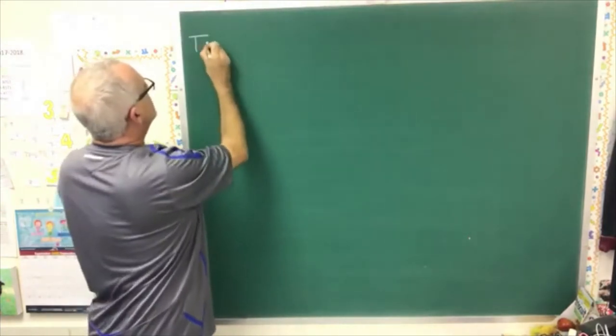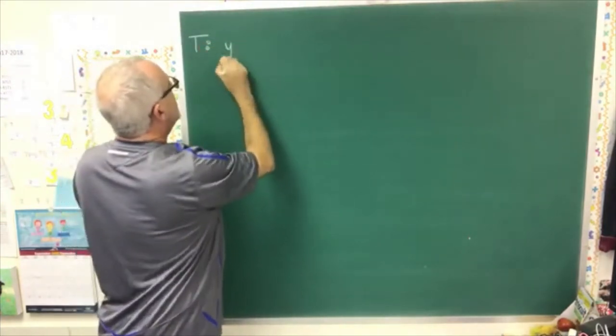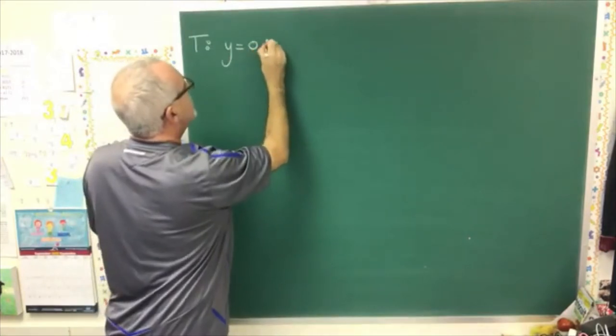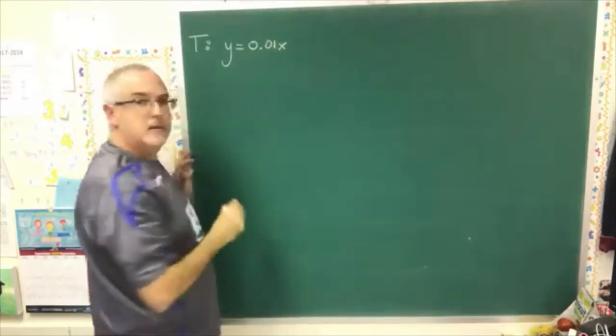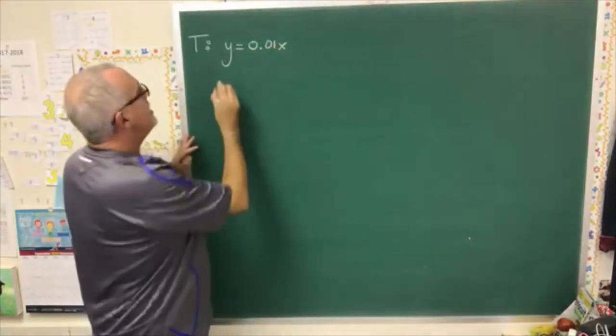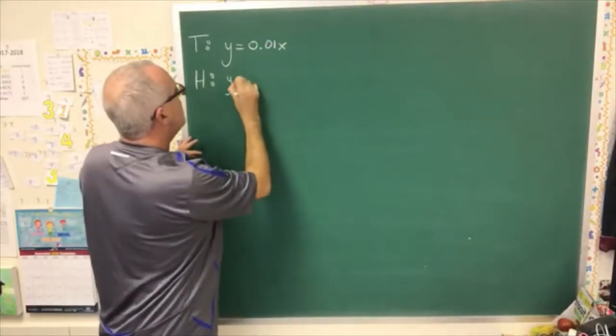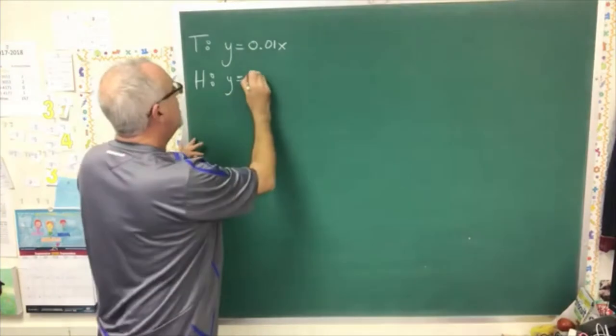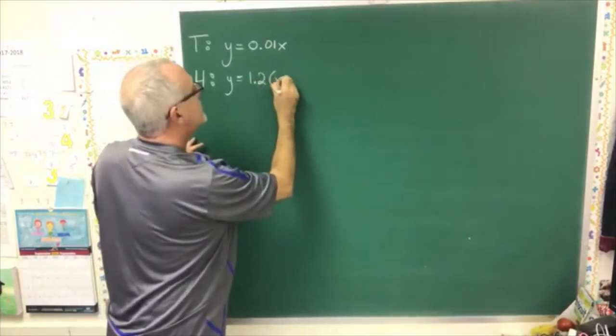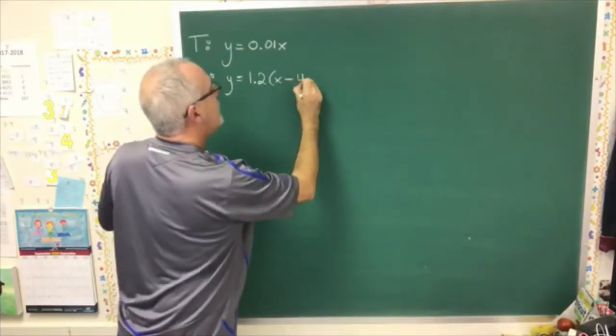So, the equation for the tortoise ends up being y equals 0.01x, simple one to create, but the equation for the hare is y equals 1.2x minus 480.